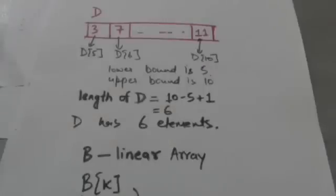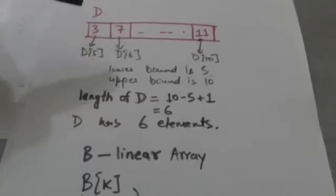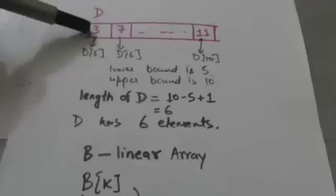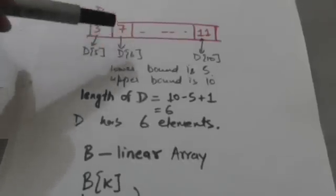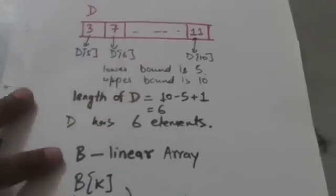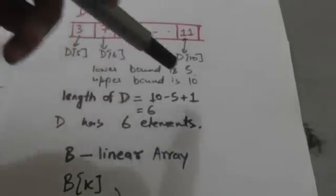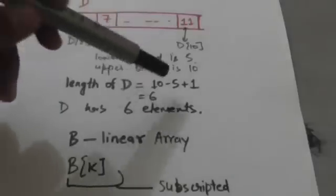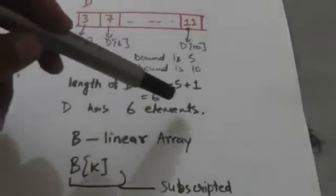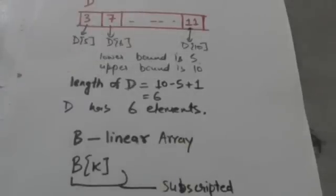Consider linear array D. The lower bound of linear array D is 5, so the first element of linear array D will be denoted by D5. The second element of linear array D will be denoted by D6, and so on. The upper bound of linear array D is 10. So the length of linear array D is equal to 10 minus 5 plus 1, which is equal to 6. This means linear array D has 6 elements.